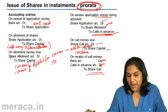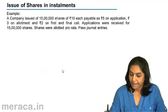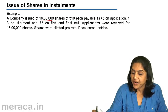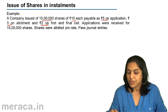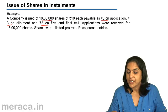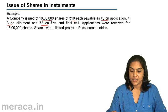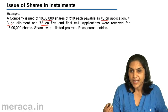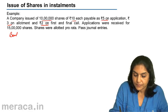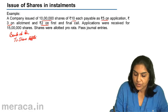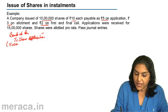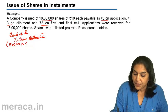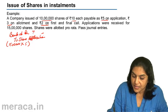Let us pass entries with an example. A company issued 10 lakh shares of ₹10 each, payable as ₹5 on application, ₹3 on allotment, and ₹2 on first and final call. Applications were received for 15 lakh shares. Shares were allotted pro rata. First entry: bank account debit to share application account with the amount received — 15 lakh shares into ₹5 — that gives us ₹75 lakhs.